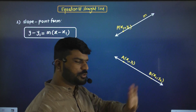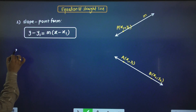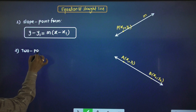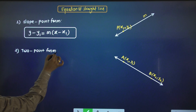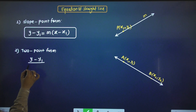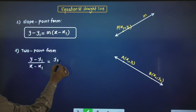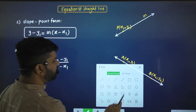When 2 points are given, we use the second form: two-point form. The equation of a straight line by using two-point form is: y minus y1 upon x minus x1 equals y2 minus y1 upon x2 minus x1. That is the two-point form.